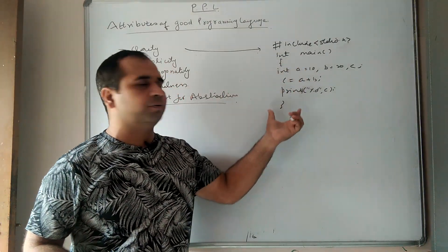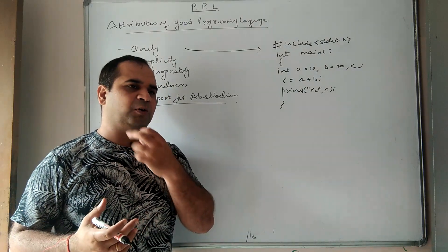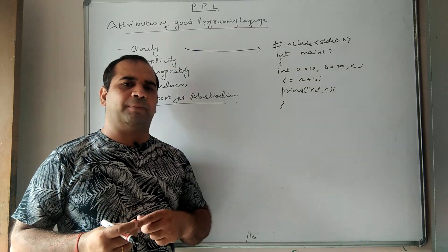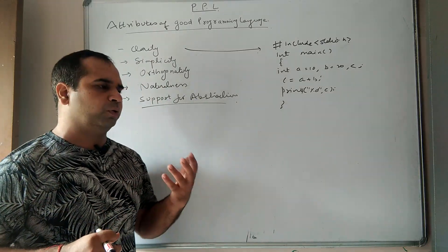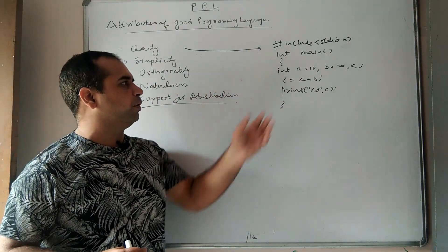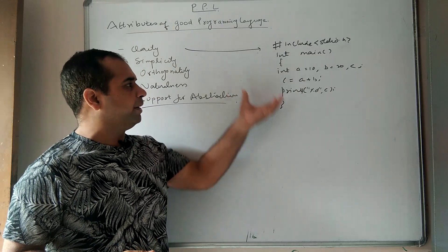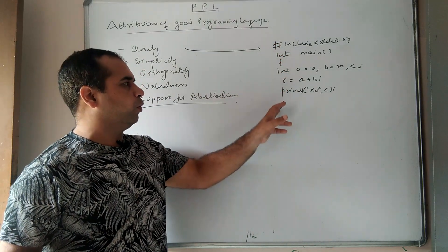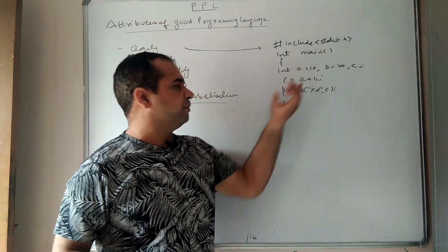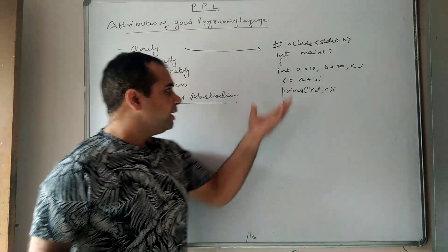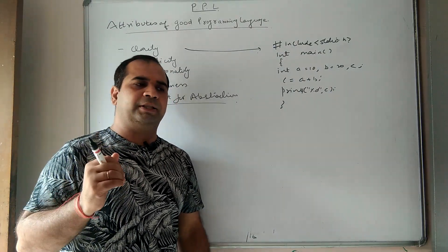Clarity means that each and every line is properly ordered and self-explanatory. It means we don't use too much recursion, too much goto, or labels — constructs which depend on one another and create confusion where we cannot grasp the correct idea of the program. Here each and every line is clear: this is the header file, this is the main function, these are the opening and closing braces, this is the data type, these are the two variables initialized, and c is the output variable.